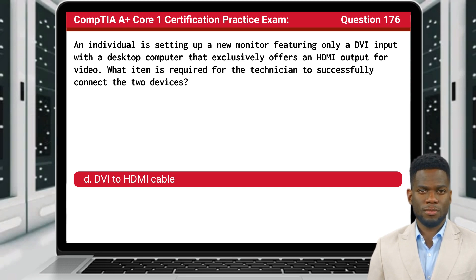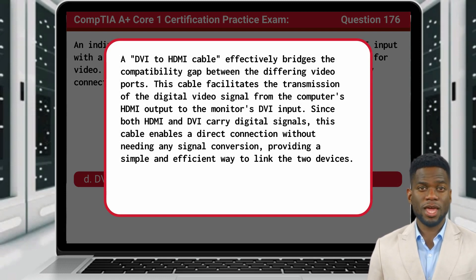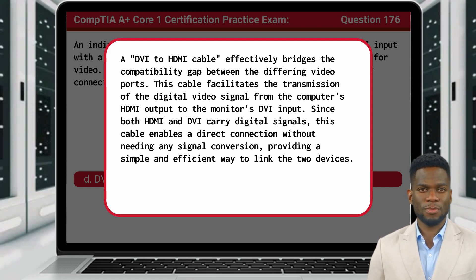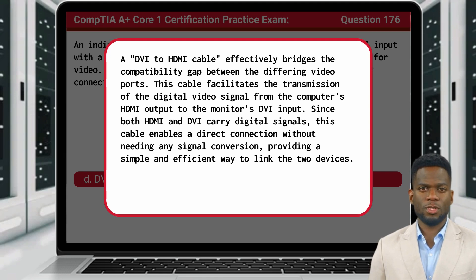The answer is D: DVI-to-HDMI cable. A DVI-to-HDMI cable effectively bridges the compatibility gap between the differing video ports. This cable facilitates the transmission of the digital video signal from the computer's HDMI output to the monitor's DVI input. Since both HDMI and DVI carry digital signals, this cable enables a direct connection without needing any signal conversion, providing a simple and efficient way to link the two devices.